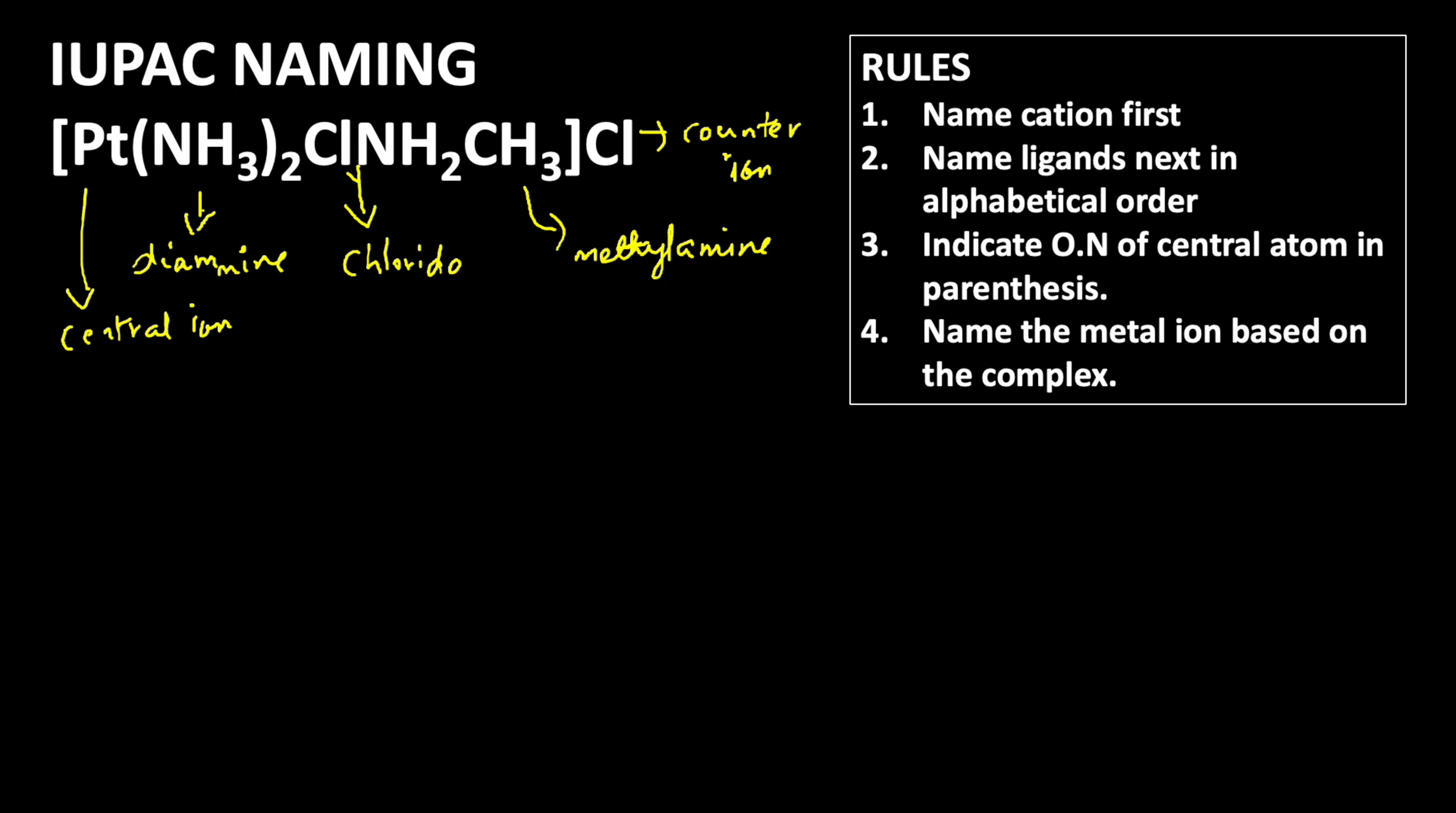So now we have to find out the oxidation number. To find the oxidation number, first we need to find the charge of that complex ion. Here the charge of the complex is cation because chloride is the counter ion, it is anion. So the complex must be cation. Here we have only one chloride ion with minus one charge. So the complex ion must be carrying plus one charge.